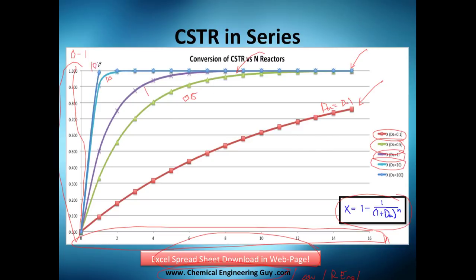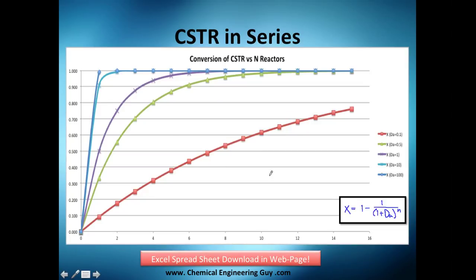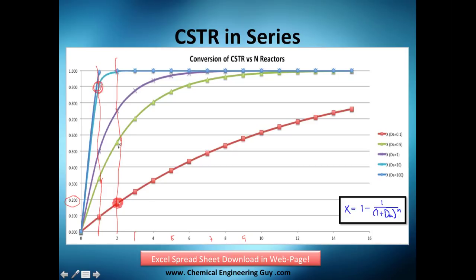The purple one is Da = 1, light blue is Da = 10, and dark blue is Da = 100. Look how drastically the Damköhler number affects the need for reactors. At one reactor — which means no series — and then two reactors, three, four, five, six, seven, eight, nine, and so on. You want the least number of reactors with the same characteristics.